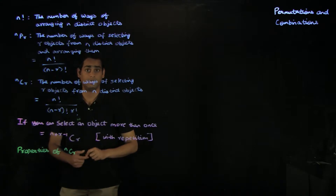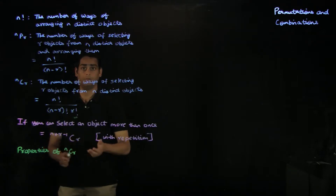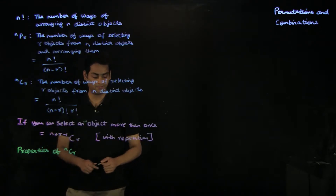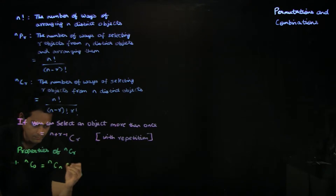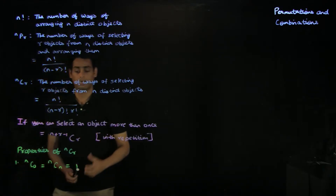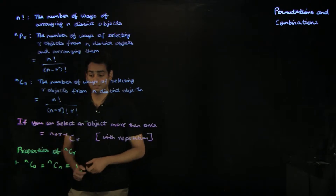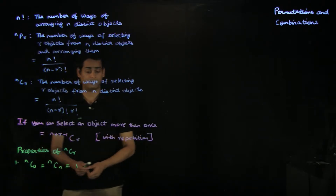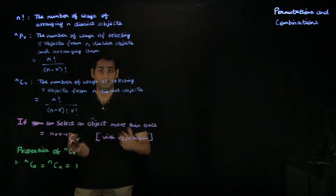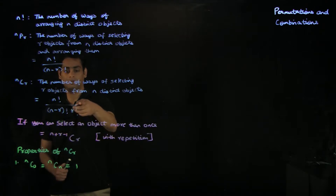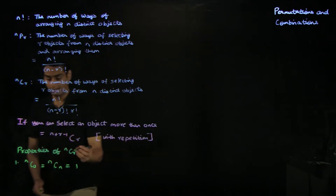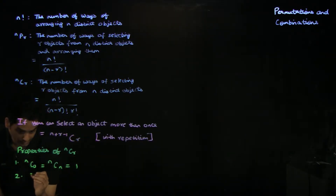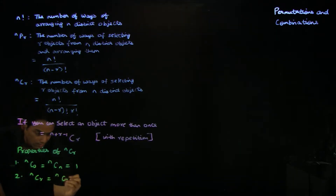We have already looked at the properties of nCr in the binomial theorem chapter, so I will just provide the properties without going into too many details of how they can be derived. The first property is that nC0 equals nCn equals 1. The number of ways of choosing 0 objects from n distinct objects equals the number of ways of choosing n objects from n distinct objects, and this equals 1. We can also derive this by plugging suitable values into the formula for nCr. The second property is that nCr equals nC(n minus r).